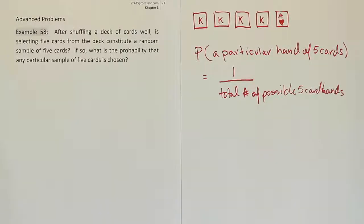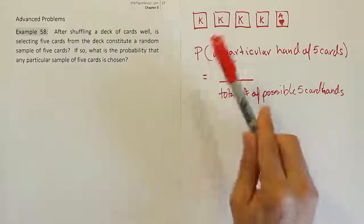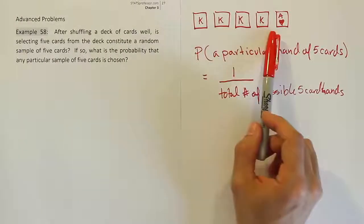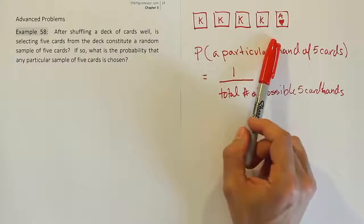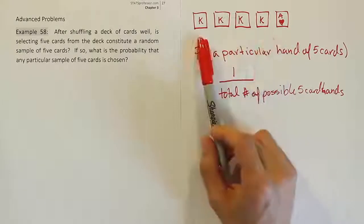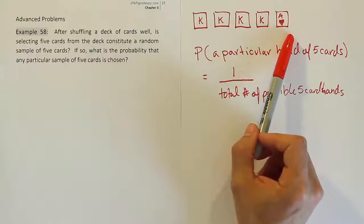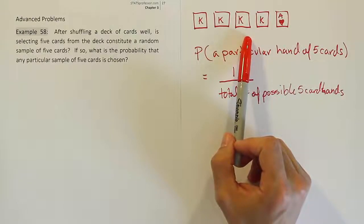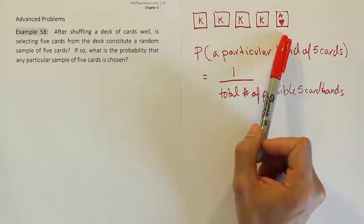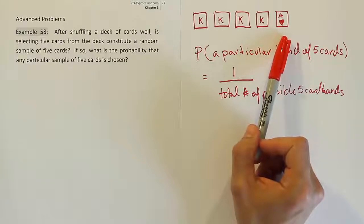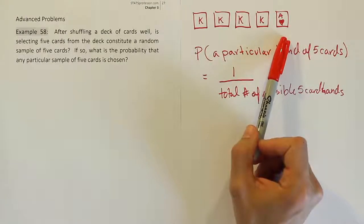The only last thing to talk about then is does order matter? In other words, like we've spoken about already, if I were to scramble up these five cards, would that change the hand that I hold? I'd say no. If the ace was first and the four kings followed or if the ace was in the middle, it wouldn't make a difference. I still have four kings and an ace of hearts. So order doesn't seem to be relevant here.